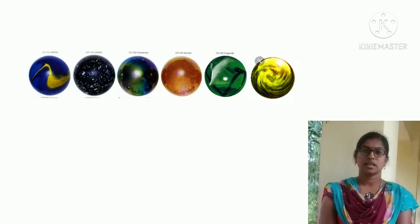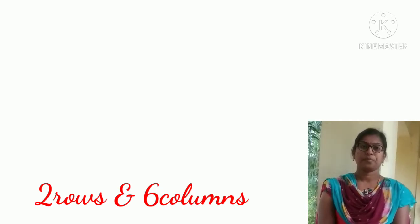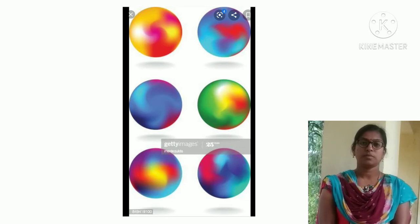Look at this other activity. 6 marbles can be arranged in 1 row and 6 columns. The same 6 marbles can be arranged in 2 rows and 3 columns, or in 3 rows and 2 columns.